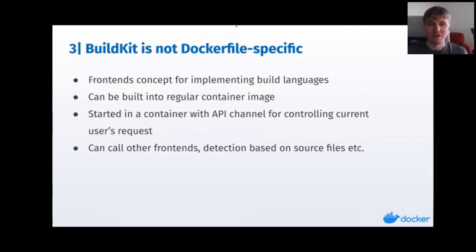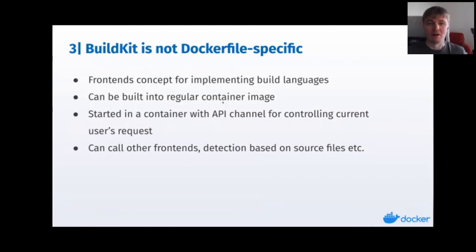To build a frontend, you don't need anyone's permission, you don't need to get a review. You can just build it on your own, build it as a container image, push it to a registry and everyone can use it — directly from Docker build and every other tool that uses BuildKit. They also run inside a container so they're sandboxed, and they have some kind of API channel exposed for talking to BuildKit so they can do fancy stuff like understand source files and things like that.